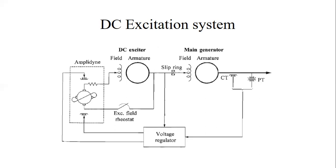As developments have come into the picture, DC excitation systems have been replaced by AC or static excitation systems. In some cases the voltage regulators alone have been replaced by modern solid-state electronic regulators, but many DC excitation systems are still in service and still require modeling in stability studies. The figure shows the schematic of a simplified representation of a typical DC excitation system with an Amplidyne voltage regulator. It consists of a DC commutator exciter which supplies direct current to the main generator field through slip rings.